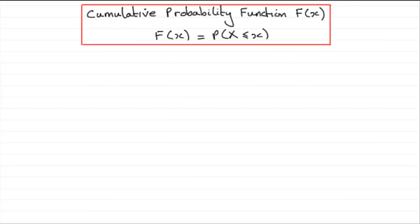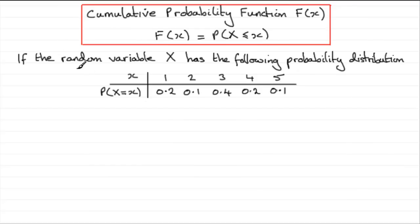So if you've got a probability distribution table for a discrete random variable, then if that random variable x has the following probability distribution, then we should be able to calculate various values of f. So for instance if we had f of 3, what that means is that we're looking at the probability that x is less than or equal to 3.